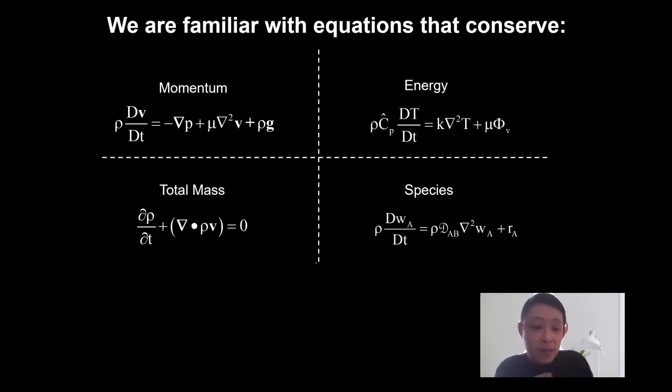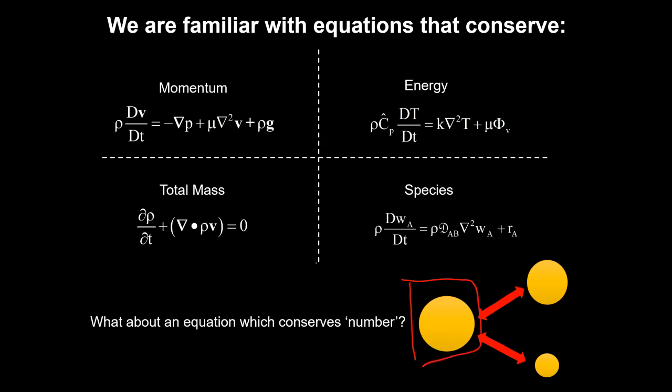These transport equations conserve momentum, energy, total mass, and mass of species. In our examples, we need to conserve the number. For example, if a big parent particle breaks into two smaller daughter particles, the number must be conserved: one particle splits into two, and the properties must sum back to the parent particle. Conversely, two smaller particles can join together to form one larger particle in agglomeration — two becomes one — and some property must still be conserved. This is the conservation of number, and this is what the population balance equation is all about.